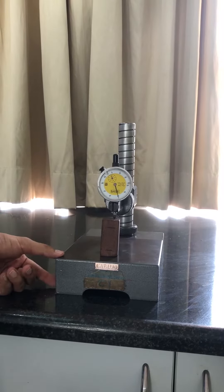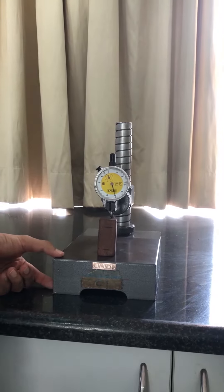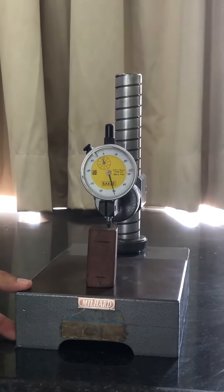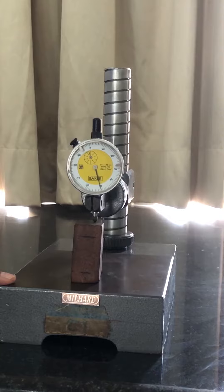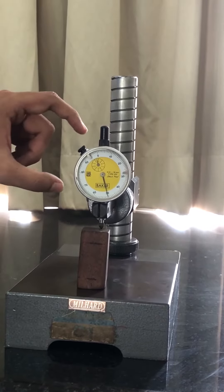The next experiment I am showing is the determination of surface roughness using a mechanical comparator. The mechanical comparator we are using here is a dial indicator or dial gauge.